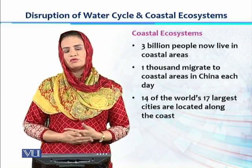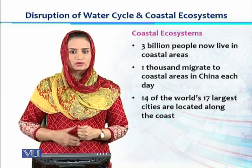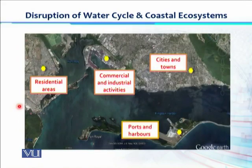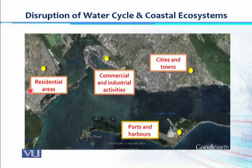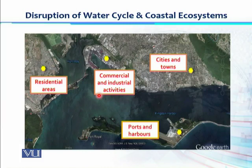We can understand this pressure with the help of an image of a coastal area. The city established in this coastal area has residential, commercial, and industrial zones where activities are continued, producing pollutants and waste materials. Cities and towns along coastlines are all adding their waste material into this ecosystem, fragmenting and damaging the habitat.